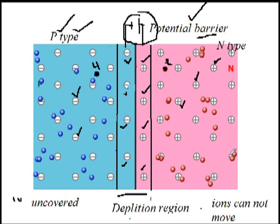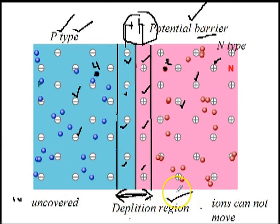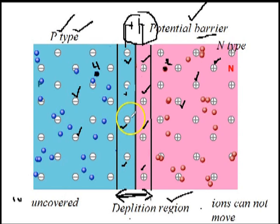So this region is called the depletion region. Why is it called the depletion region? Because there are no majority carriers — the majority carriers are depleted, meaning they are absent. No majority carriers: that is the depletion region. It is also called the junction. Why is it called the junction? Because holes and electrons neutralize each other here. This is the meeting place of holes and electrons, that's why it is called a junction.